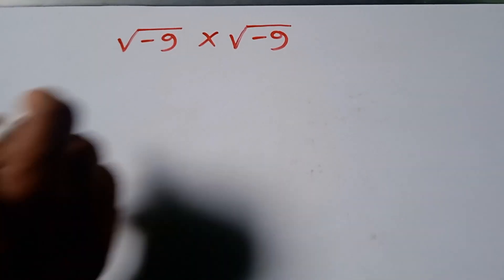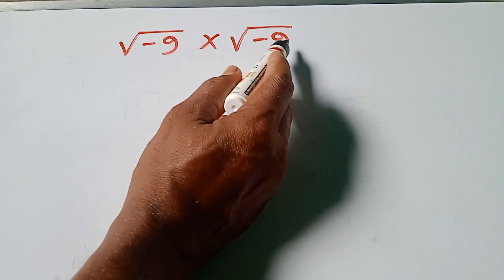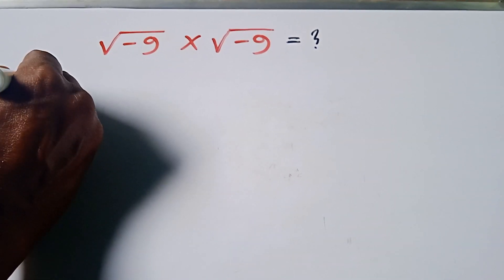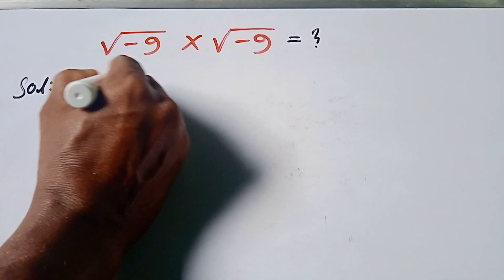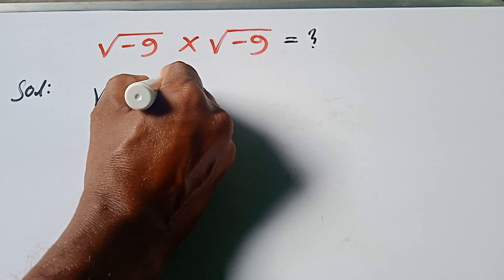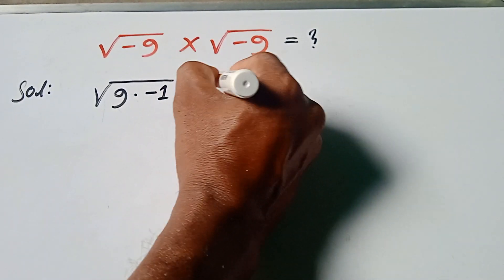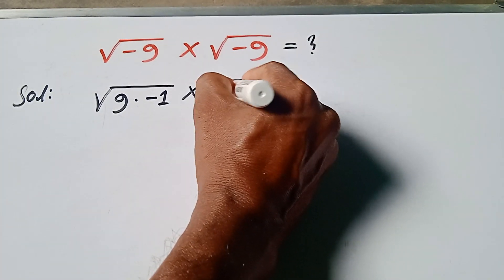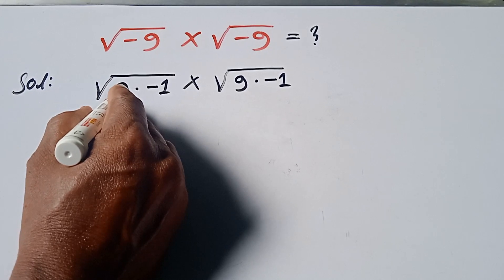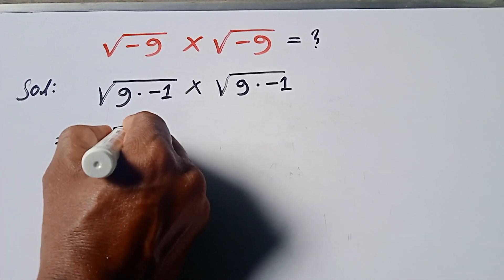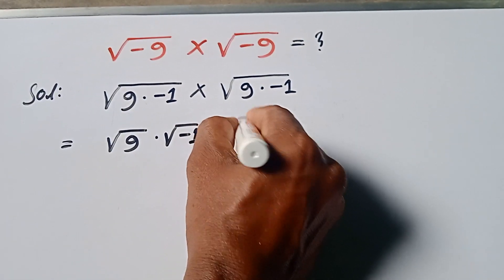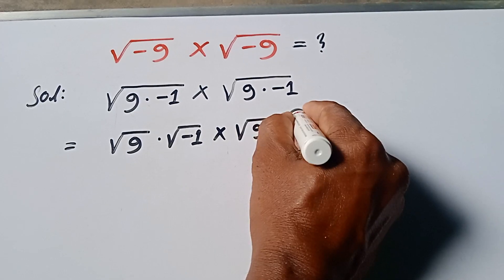A nice root problem: root over minus 9. What is root(-9) equal to? Solution: root(-9) = √(9 × -1) = √9 × √(-1).